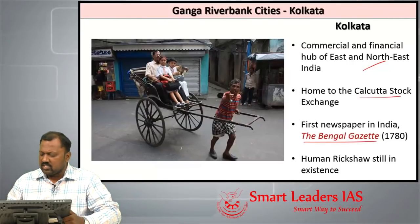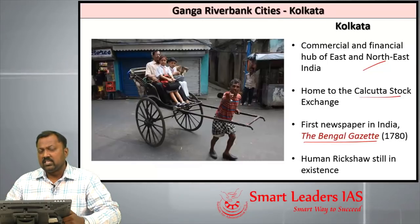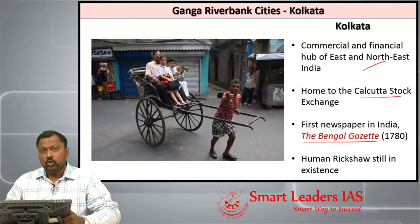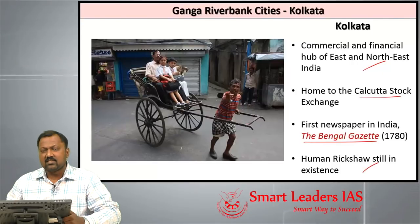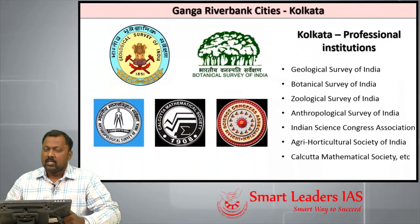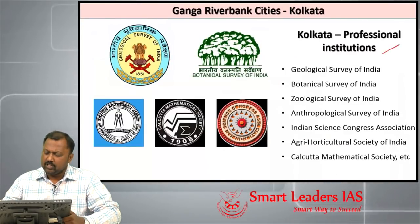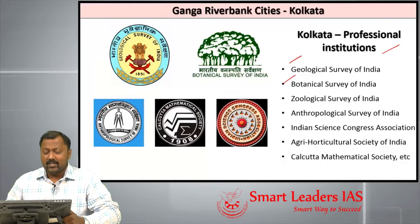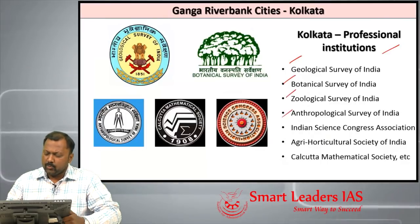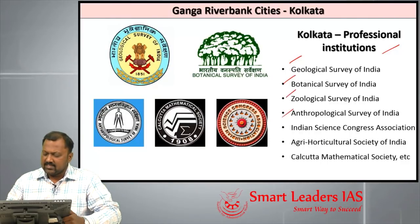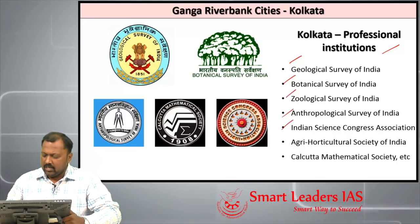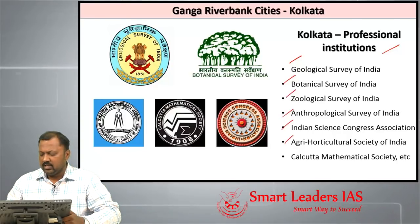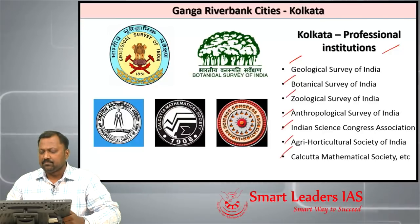The first newspaper in India, the Bengal Gazette, was started in Kolkata in 1780. Human rickshaws are still in existence in Kolkata. There are many professional institutes in Kolkata, including the Geological Survey of India, Botanical Survey of India, Anthropological Survey of India, Indian Science Congress Association, Agri-Horticultural Society of India, and the Calcutta Mathematical Society.